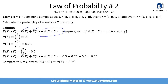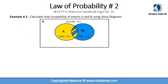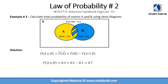Example two involves a Venn diagram for visual understanding. We need to calculate the total probability of events A and B, given: P(A) = 0.3, P(B) = 0.5, and P(A ∩ B) = 0.1 (the hashed overlapping area). Using the formula: P(A ∪ B) = 0.3 + 0.5 − 0.1 = 0.7.